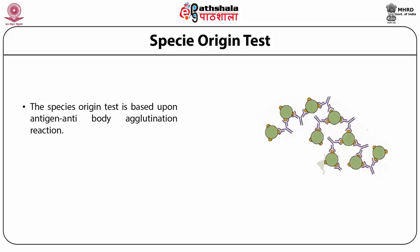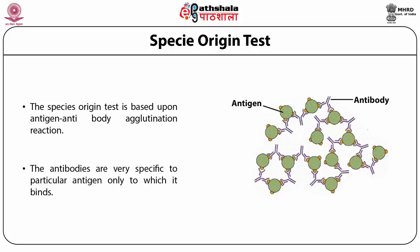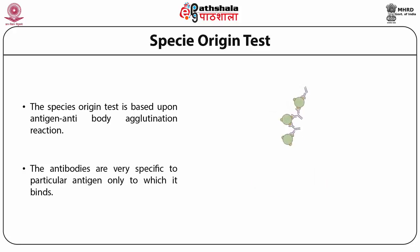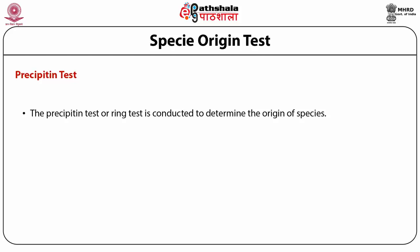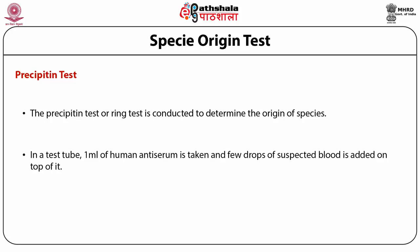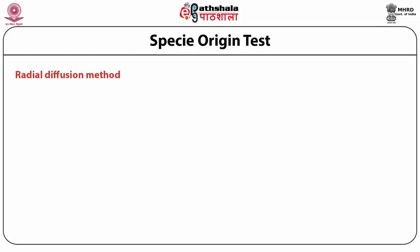The species origin test is based upon an antigen-antibody agglutination reaction. The antibodies are very specific to a particular antigen only, to which they bind. The first is the precipitin test or ring test, conducted to determine the origin of species. In a test tube, 1 ml of human antiserum is taken and a few drops of suspected blood are added on top of it. If the blood is from human origin, it will form a precipitin ring at the junction of the two liquids, giving a positive result.